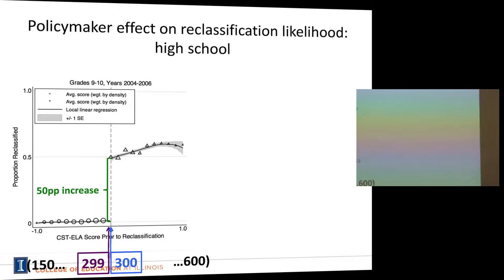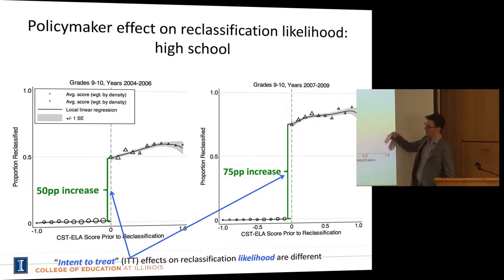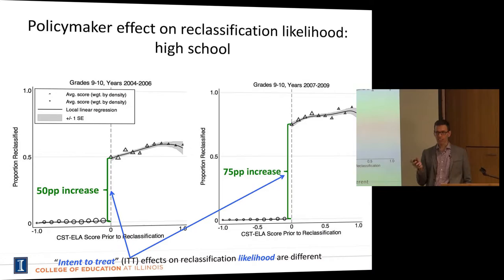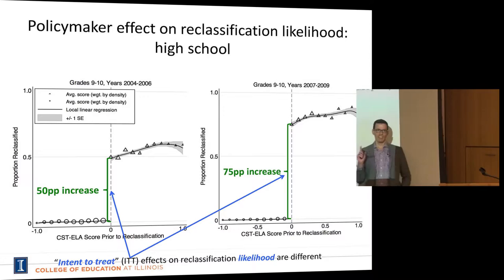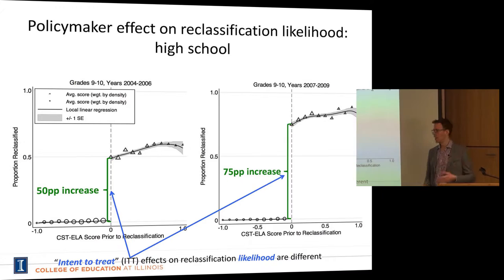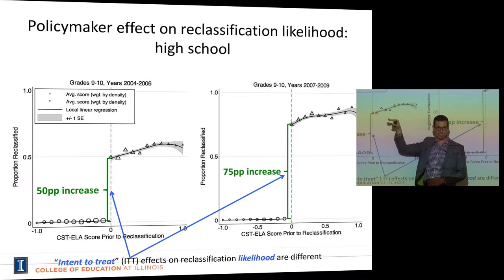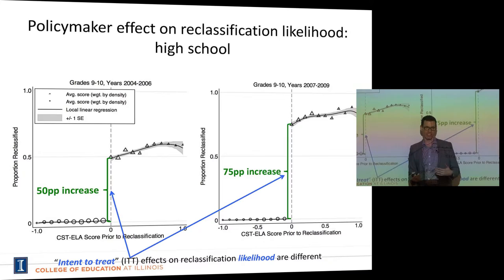In the post-2007 period, we see an even bigger increase in reclassification likelihood — a 75 percentage point increase — explaining why compliance is different in the two periods. It's worth noting that within each individual period, the compliance rate creeps up each year, reflecting increasing pressure in California and LAUSD to reclassify kids who meet the criteria. So the jump from 50 to 75 percentage points isn't sudden — it's a steady progression upward within each policy period.